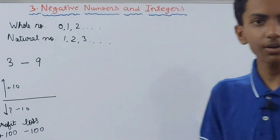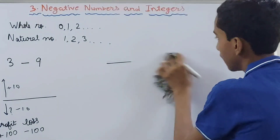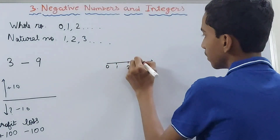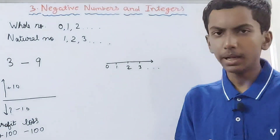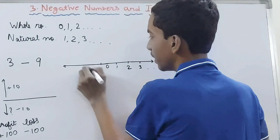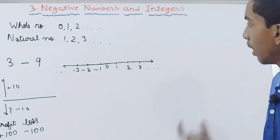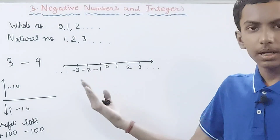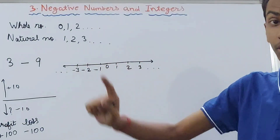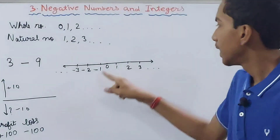Let's see how we represent integers on the number line. So far you had 0, then 1, 2, 3 and so on to the right. In the integer system, the line extends to the left of 0 and you have minus 1, minus 2, minus 3 and so on. All numbers to the right of 0 are positive, all numbers to the left of 0 are negative. The smallest positive integer is 1 and the greatest negative integer is minus 1. Zero is neither positive nor negative.